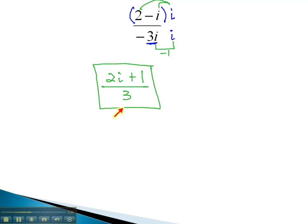When it's simply a monomial complex number, all we must do is multiply top and bottom, numerator and denominator, by i.